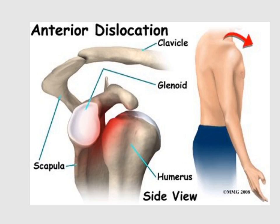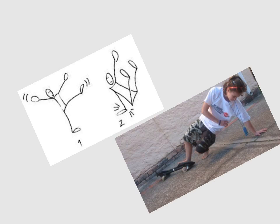Let's start with anterior dislocation. Anterior dislocation is an anterior displacement of the humerus in relation to the glenoid cavity. The most important trauma that may cause anterior shoulder joint dislocation is falling down on an outstretched backward hand. As we can see in this diagram, an outstretched backward hand in medical terms means an extended, abducted, and externally rotated hand.